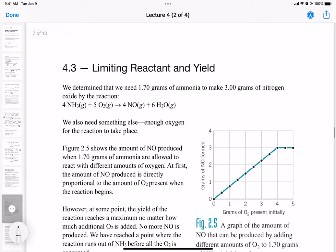All right, so now we have to get to one of the more tricky aspects of stoichiometry and that's called the limiting reactant and chemical yield. Remember the last example, we said we found 1.7 grams of ammonia to make three grams of nitrogen oxide by this chemical reaction. However, the other thing that determines the outcome of this reaction is oxygen, right?